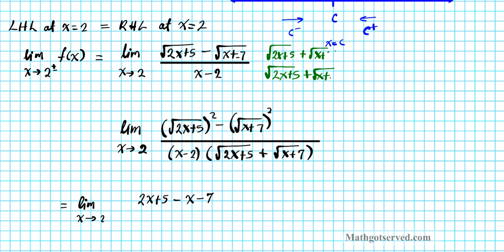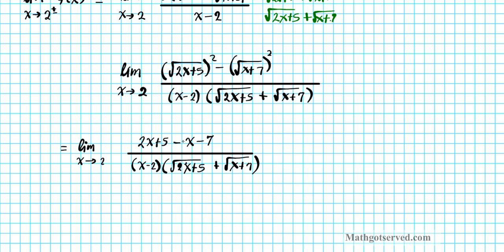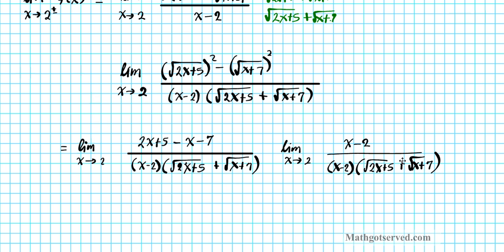So we have (x − 2) in the numerator divided by (x − 2) times (√(2x + 5) + √(x + 7)) in the denominator. The discontinuity is removable — we can cancel the (x − 2) factors. Now we can simply plug in x = 2 without any complications.